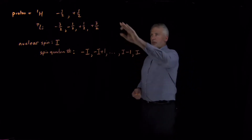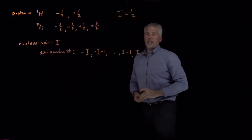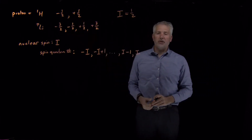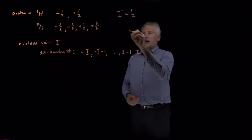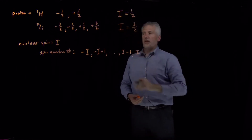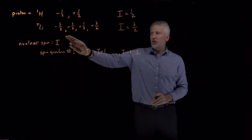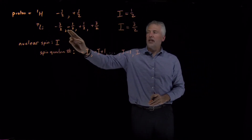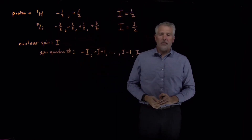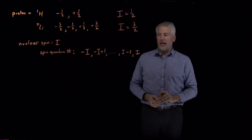For example, a proton is a spin one-half nucleus — it has a nuclear spin of one-half, so its possible spin quantum numbers are negative or positive one-half. The nuclear spin of a lithium-7 nucleus is three-halves, which is why it can range from negative three-halves, increasing by one, all the way up to positive three-halves. In general, if we know the nuclear spin of a particular nucleus, we can predict the values that the spin quantum number can have.